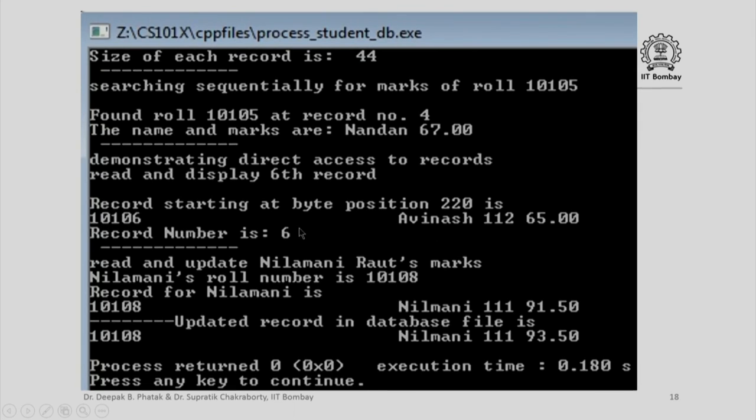Next, most important, we want to read a record, update its values, and rewrite it. Read and update Nilamani Rauch's marks. Nilamani Rauch's roll number is 10108. The record for Nilamani is 10108, Nilamani, 111, 91.50. Now, updated record in database file is this. We confirm that the earlier value is 91.5, the new value is 93.5.